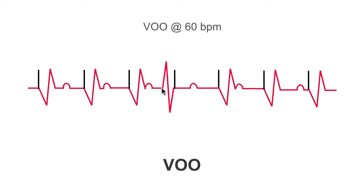All of a sudden we get a premature ventricular complex, seen by this QRS here. It hasn't been seen by the pacemaker — remember, the pacemaker is not sensing. It's just pacing at 60 beats per minute. So exactly one second after this output pulse, it will deliver another output pulse regardless. The output pulse is delivered, but the tissue is refractory, so it is unable to trigger a ventricular depolarisation. Delivering a pacing output into tissue that is refractory or repolarising can be potentially dangerous, and we'll come on to that later.